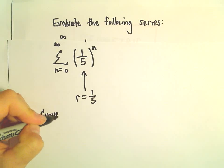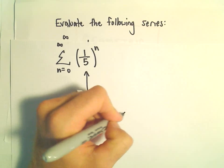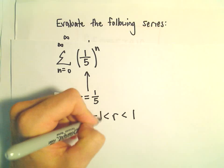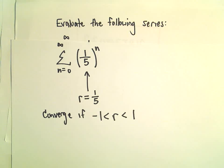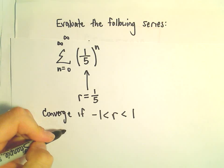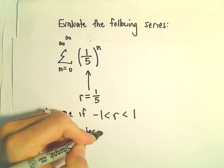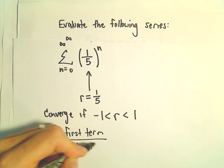And these converge if our r value is in between positive 1 and negative 1. And they converge to, sometimes people will write it as a over 1 minus r. I like to think about it as being the first term over 1 minus r.